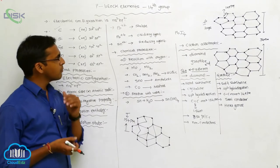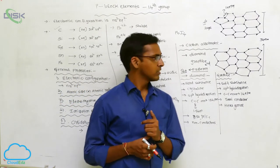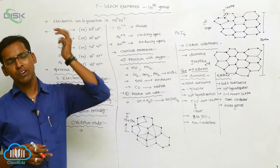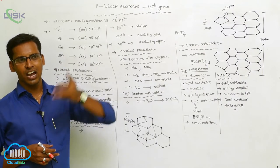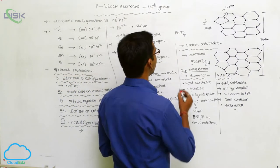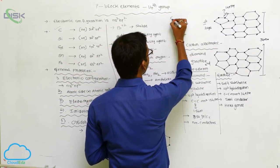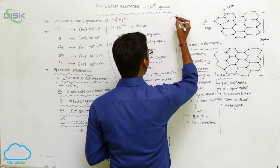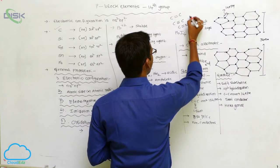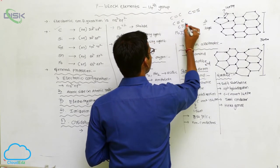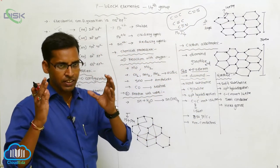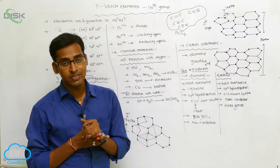Carbon reacts with oxygen to form different oxides such as carbon dioxide and carbon monoxide. Carbon also has a catenation property, which allows it to form various compounds with C=C, C≡C, C=N, C=S, or C≡N bonds.